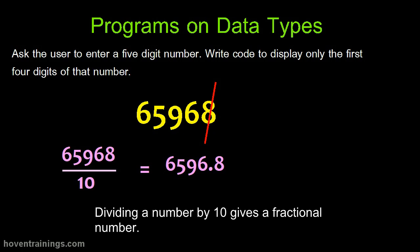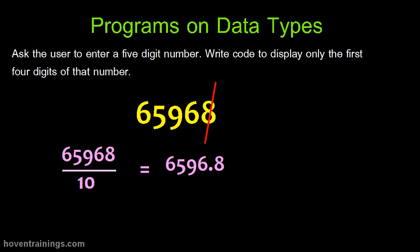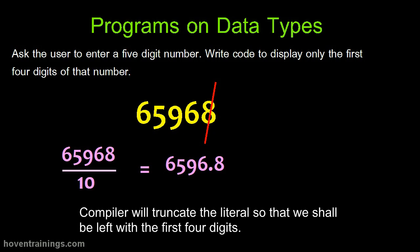Dividing a number by ten gives a fractional number. The fraction can be dropped by storing this in an int type of a variable. Compiler will truncate the literal so that we shall be left with the first four digits.